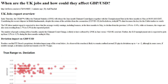1.2600 acts as an immediate resistance ahead of the monthly high of 1.2670. About UK jobs: The UK average earnings released by the Office for National Statistics (ONS) is a key short-term indicator of how levels of pay are changing within the UK economy. Generally speaking, positive earnings growth is seen as positive or bullish for the GBP, whereas a low reading is seen as negative or bearish.